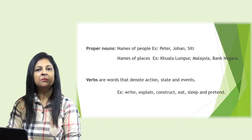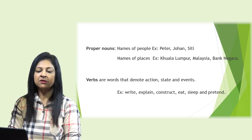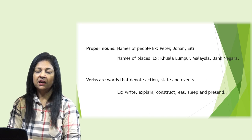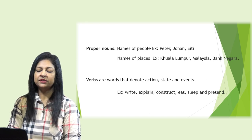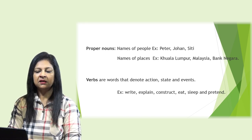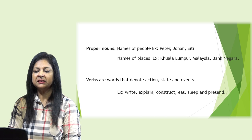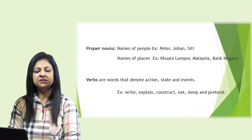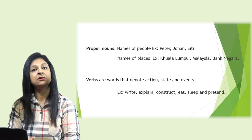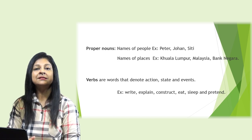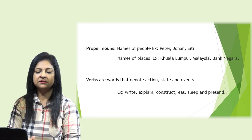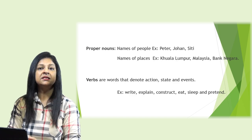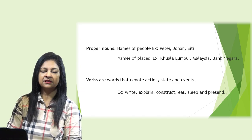When it comes to proper nouns, these are names of people such as Peter and John, and names of places such as Kuala Lumpur and Malaysia. Verbs are words that denote action, state, and events, such as write, explain, construct, eat, sleep, and pretend.